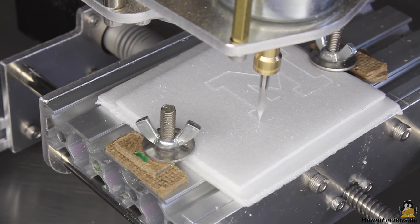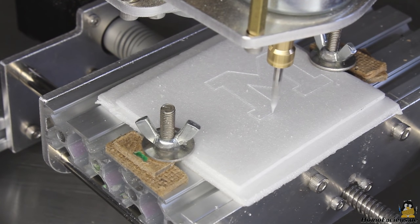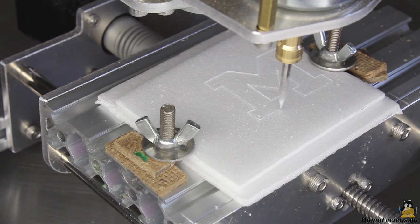A deep engraving is processed in several runs. Besides the feed rate, the depth per path is another machine parameter to be considered.